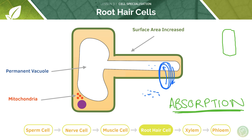In addition, root hair cells have many mitochondria, and that's to increase the energy available for the active transport of mineral ions. Remember, active transport requires ATP — that's energy — and that's where we need our mitochondria, because they are the powerhouse of the cell and they provide this energy.